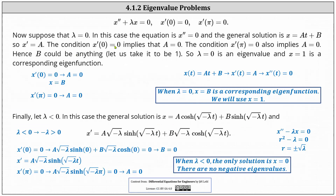Now suppose lambda equals 0. In this case, the equation becomes x double prime equals 0, and therefore the general solution is a linear function x equals a t plus b. The second derivative is equal to 0, which satisfies the differential equation. From here, x prime is equal to a. Using the condition x prime of 0 equals 0, well if x prime is equal to a and x prime of 0 equals 0, we know that a must equal 0. If a is equal to 0, then we have x equals b. Notice the condition x prime of pi equals 0 doesn't give us any new information — it still implies a equals 0.